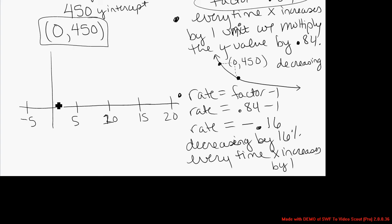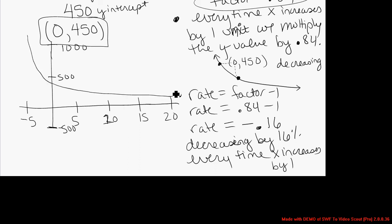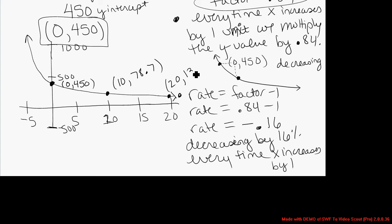With x running from negative 5 to 20 and y running from negative 500 up to positive 1,000, you get a pretty decent graph. The graph is a decreasing exponential function — it is decreasing and concave up. The y-intercept is (0, 450). A couple of other points on the graph: at x equals 10, you get approximately 78.7, and at x equals 20, you get approximately 13.8.